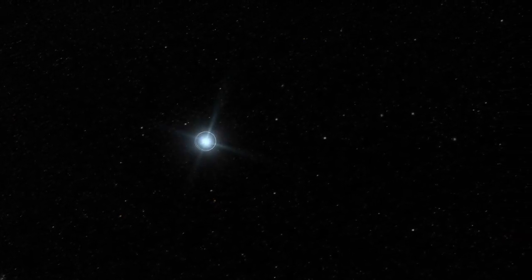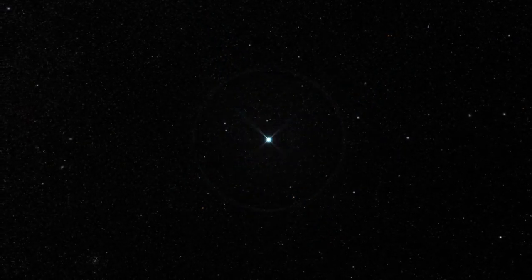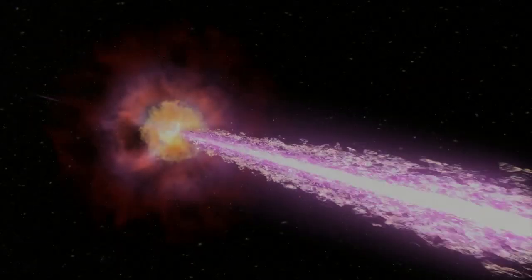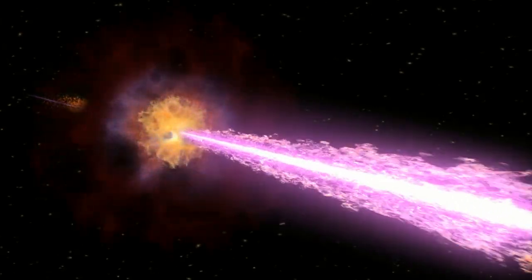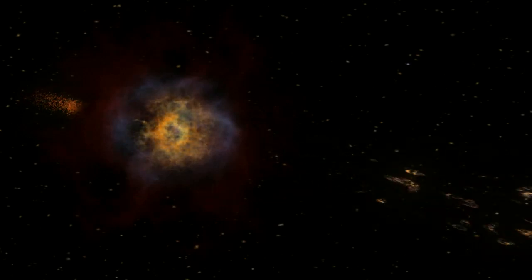Every day or two, on average, satellites detect a massive explosion somewhere in the sky. These are gamma ray bursts, the brightest blasts in the universe. They're thought to be caused by jets of matter moving near the speed of light associated with the births of black holes.